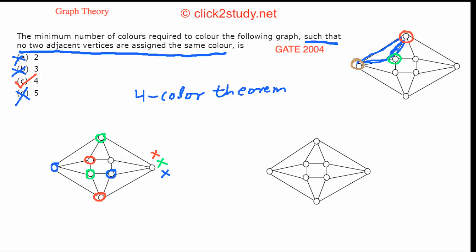The answer has to be four colors. Let me show how to color it with four. I give blue to this vertex, red to the adjacent vertex, blue to the next, and red to complete that cycle. Then I give green to this one — a new color that can safely go there. I've used three colors so far, with one remaining, and I give this one brown color.